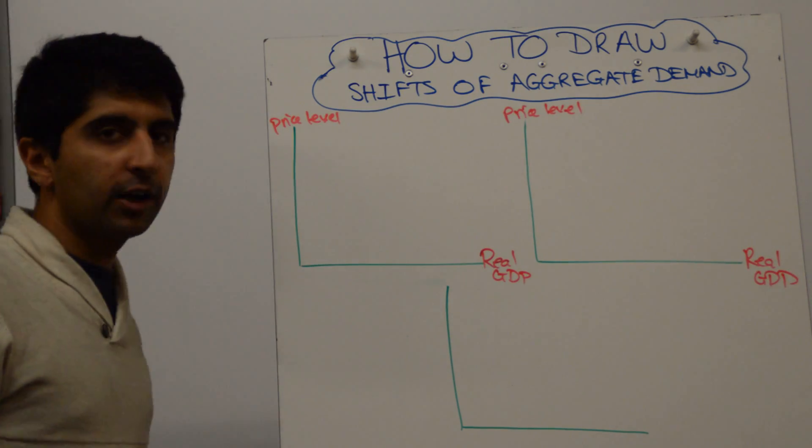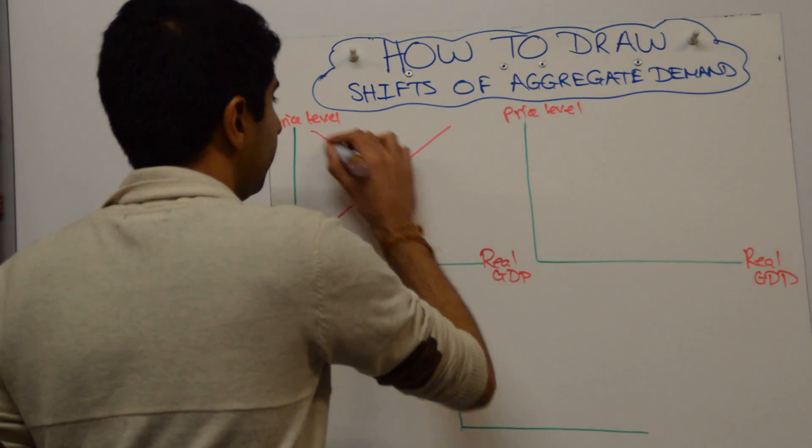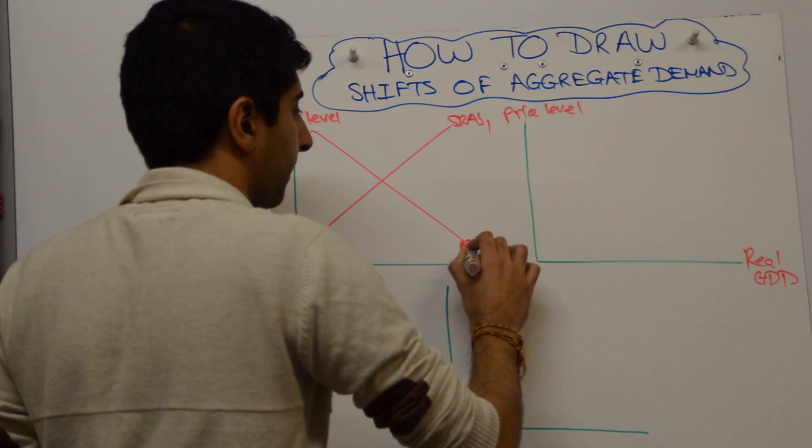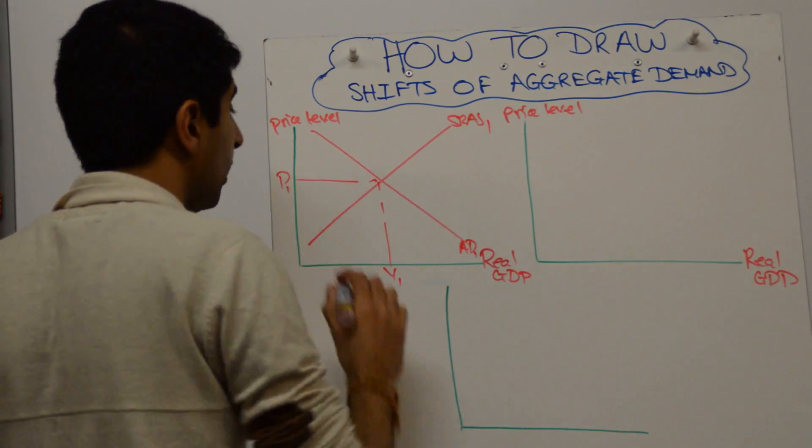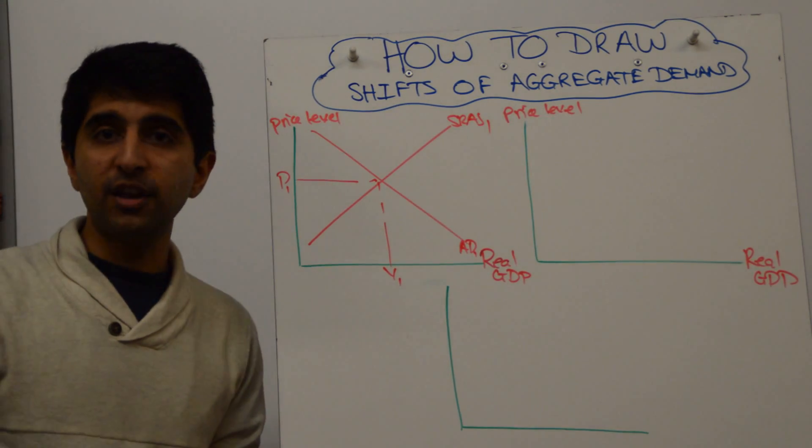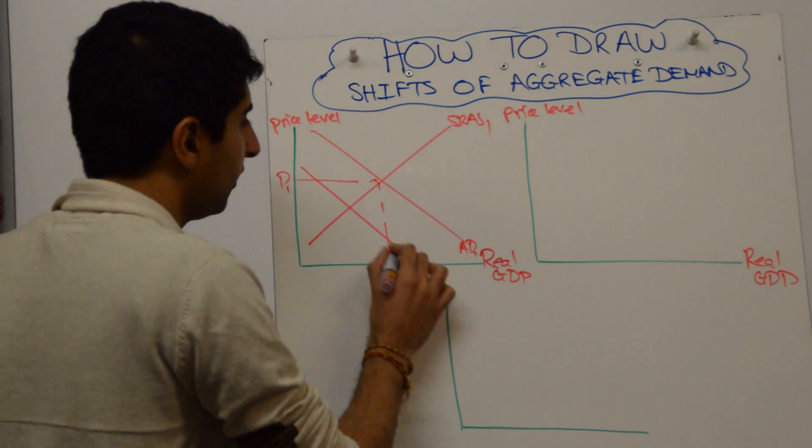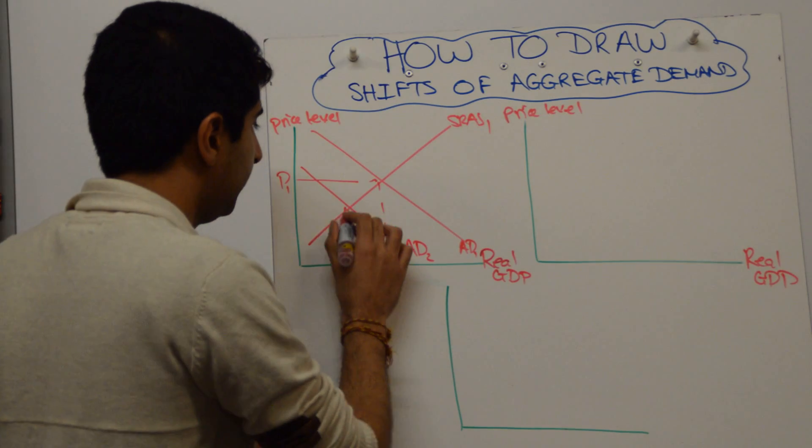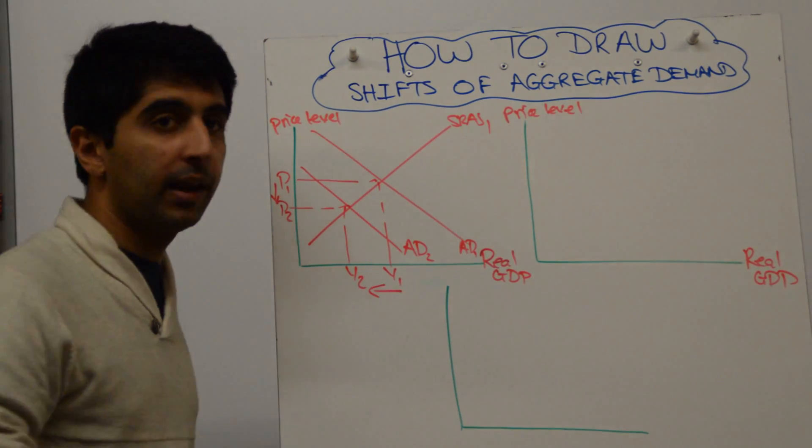Right, on the left here we're going to do the really simple one, which is just of AD and SRAS. Initial equilibrium of Y1 and P1. And all you need to do here is shift AD whichever way you need to do it. So let's say it's an AD shift to the left, and there you go. From AD1 to AD2. Done. Okay, with a lower price level and a lower output level as well.